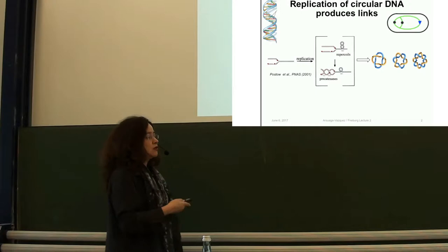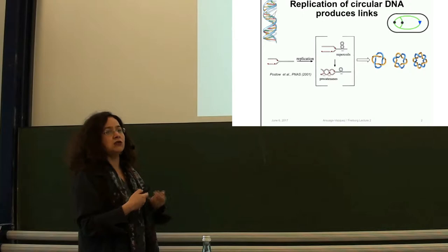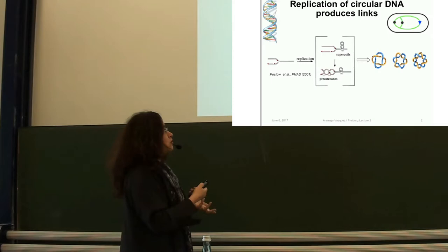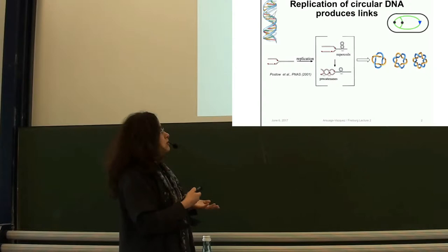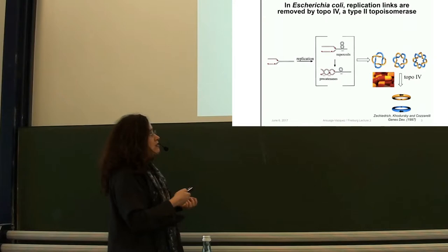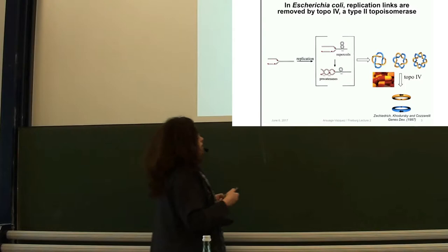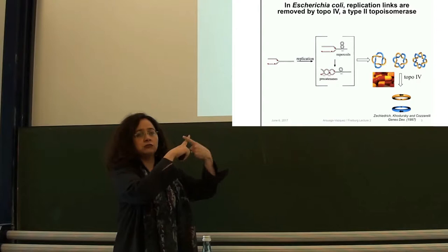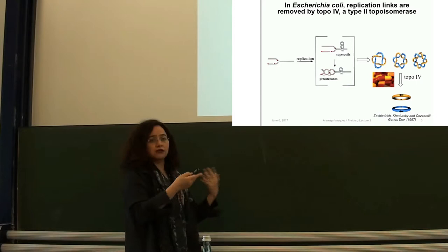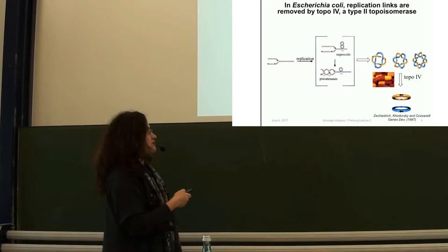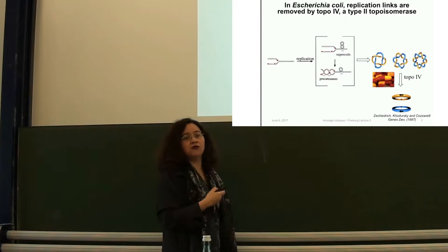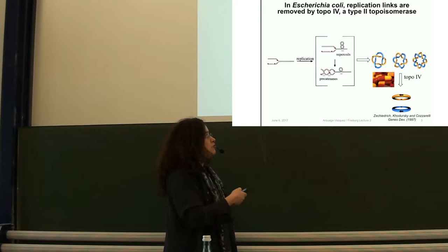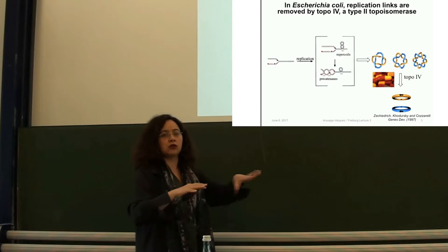This cell wants to divide into two cells, and each cell needs to inherit one copy of the chromosome, so something has to happen that will unlink these two DNA molecules. Enzymes are in charge of doing the unlinking. It is widely accepted that in E. coli, the type 2 topoisomerase Topo-4 unlinks the DNA. What Topo-4 does is a crossing change — it changes a positive crossing to a negative crossing or negative to positive. These topoisomerases act very quickly and efficiently on the interlinked DNA, unlinking the two newly replicated circles, which then can segregate to the daughter cells at cell division.